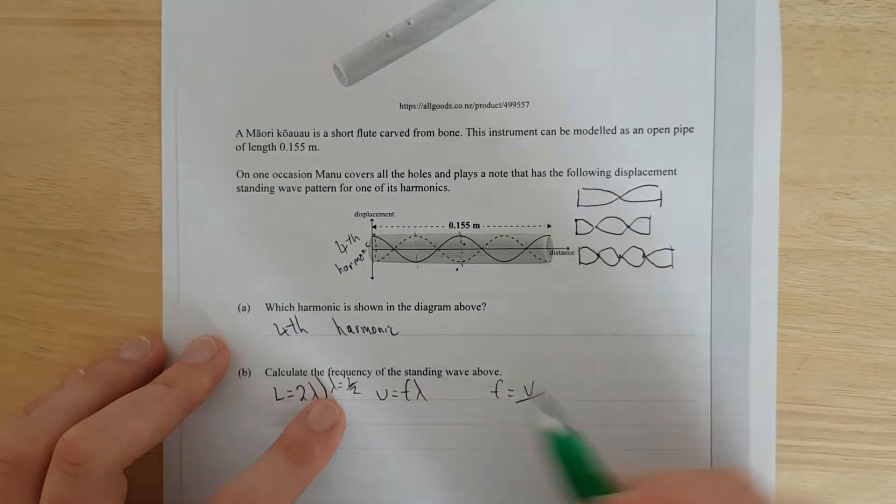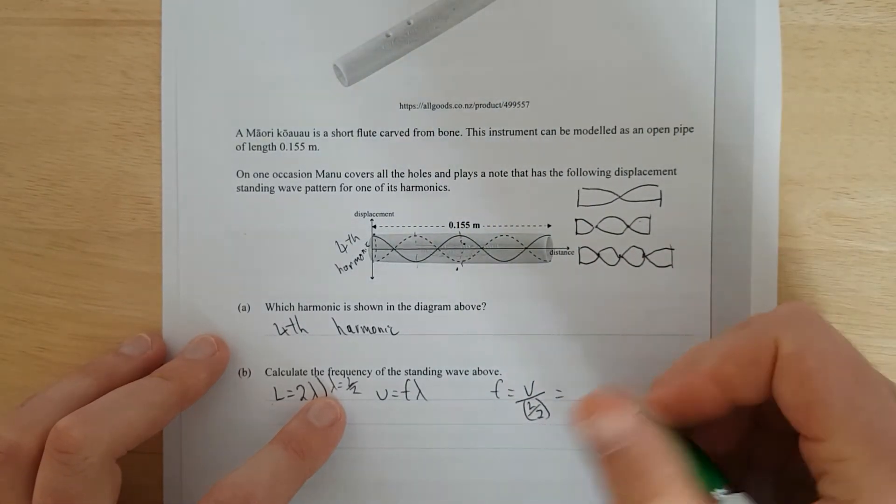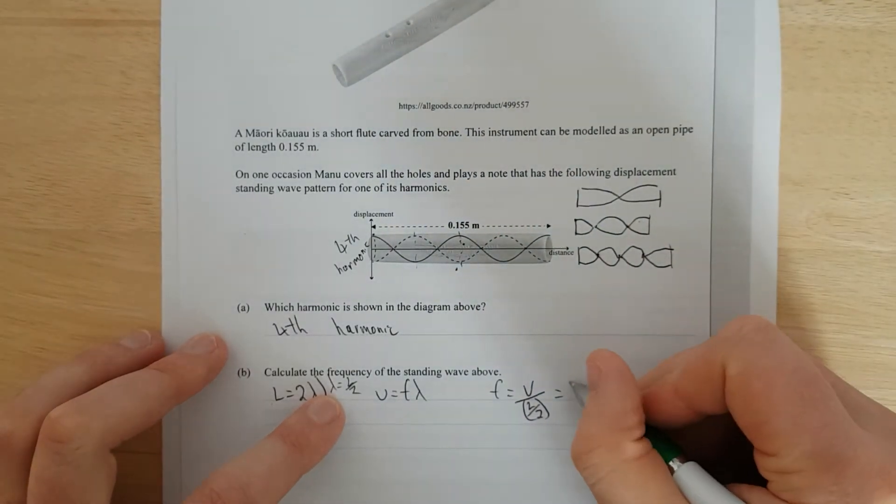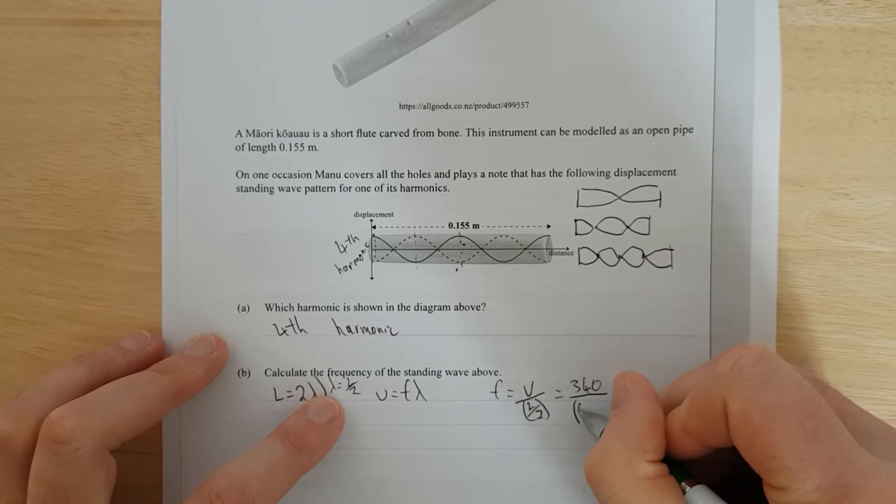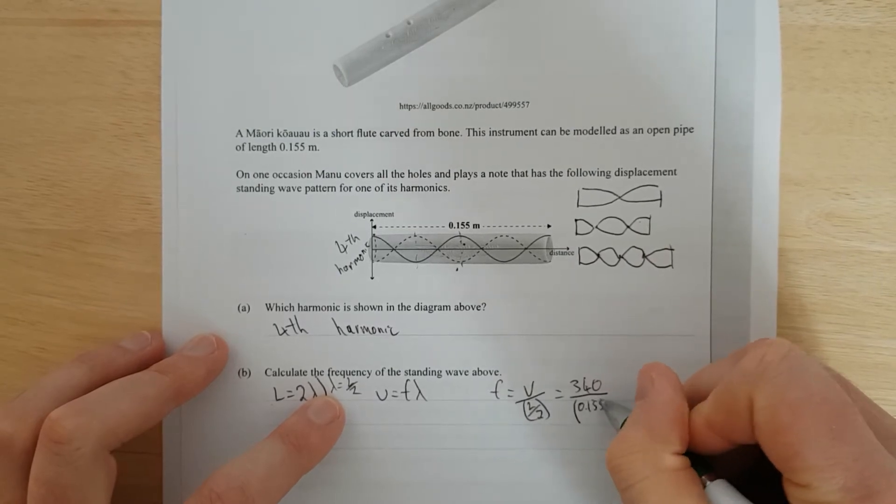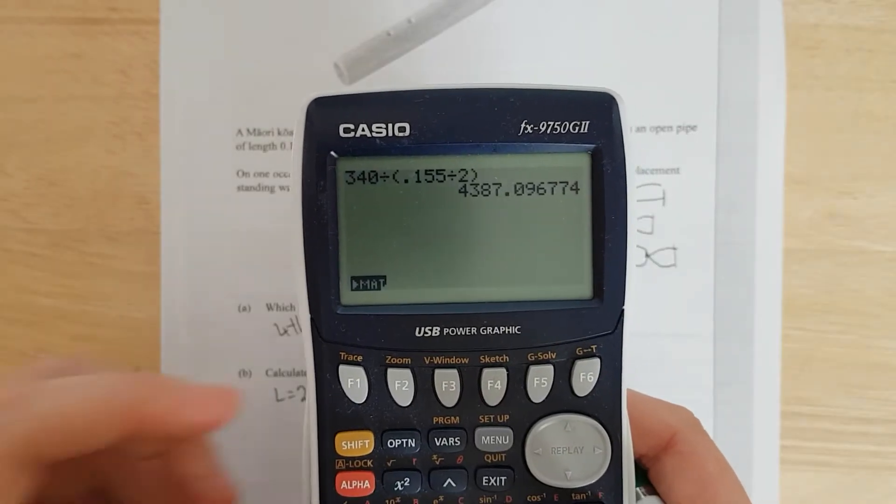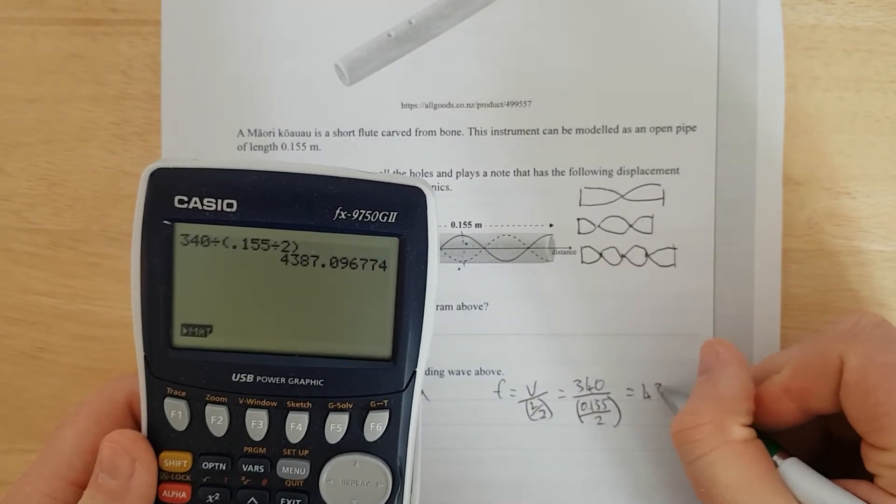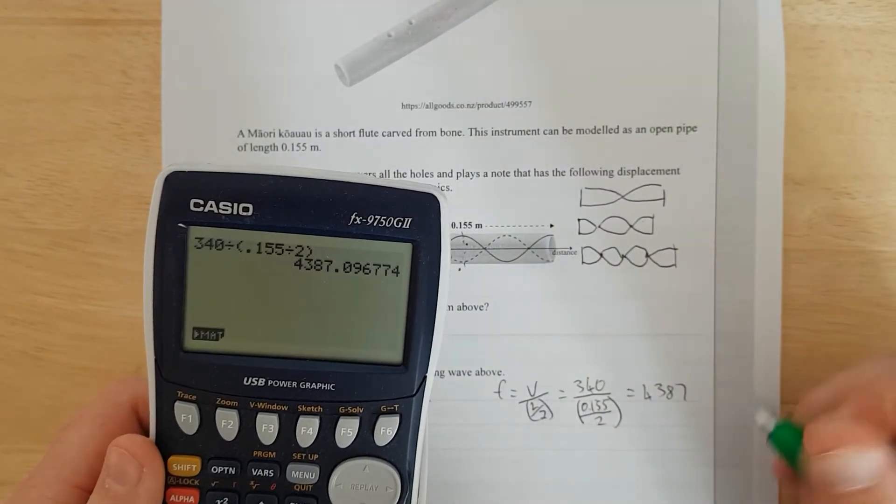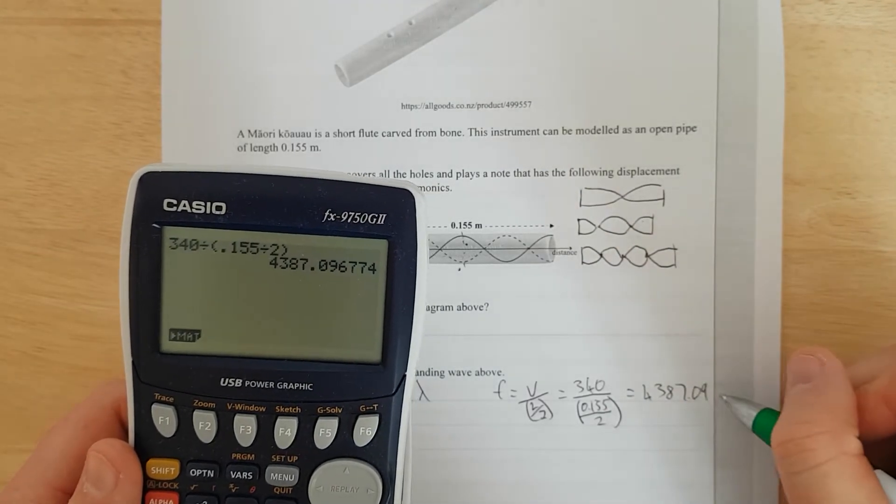Just put a border around there. The wavelength equals L over 2. And now I know that wavelength is L over 2, so I'm going to chuck that in. L over 2. I'll chuck brackets around there, because I could rearrange, but I can't be bothered. So that is going to be equal to 340, divided by brackets, 0.155, divided by 2, and that is going to be equal to 4,387. So I'll write that, 4,387. I could put 0.09, because this is my unrounded answer, why not, hertz.